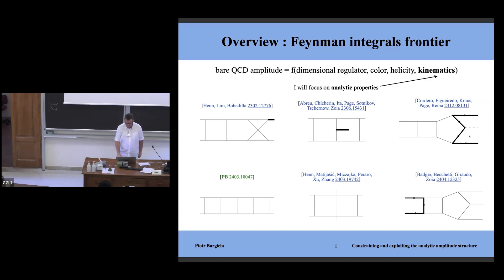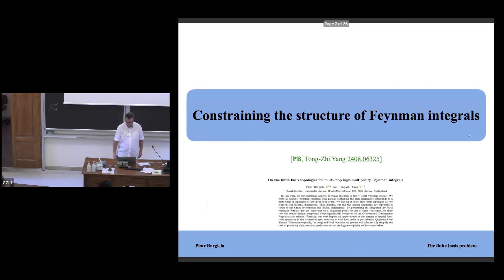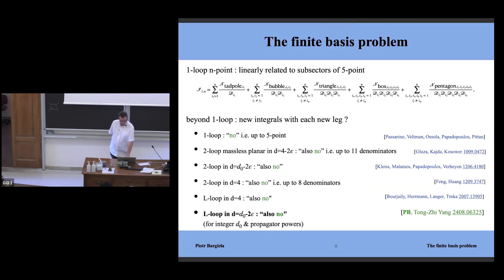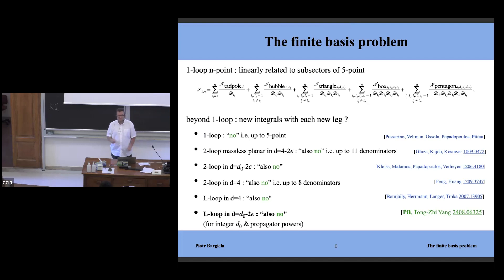Let me start with constraining the structure of Feynman integrals — this is work based on my collaboration with Tongji Yang. It is well known that at one loop, the most complicated integral in dimensional regularization is a pentagon, plus all its subsectors: box, triangle, bubble, and tadpole, up to all permutations. There is an upper bound on how complicated your integral can be, and we ask: what happens at higher loops? Is this a coincidence at one loop, or a general property?